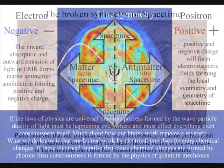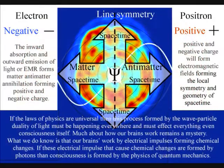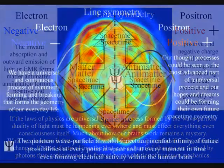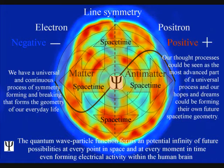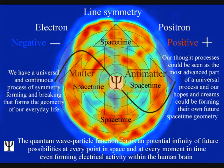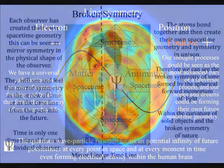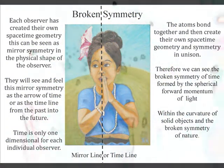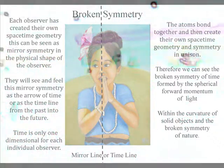Despite rapid progress, much about how the brain works remains a mystery, but what we do know is that our brains work by electrical impulses forming chemical changes. This electrical activity also forms electromagnetic fields. If these electrical impulses that cause chemical changes are formed by photons, then consciousness is formed by the physics of quantum mechanics. Therefore our thought processes could be seen as the most advanced part of a universal process, and our hopes and dreams could be forming their own future space-time geometry.